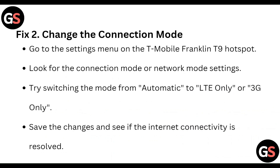Fix 2: Change the connection mode. Go to the settings menu on the T-Mobile Franklin T9 Hotspot. Look for the connection mode or network mode settings. Try switching the mode from automatic to LTE only or 3G only. Save the changes and see if the internet connectivity is resolved.